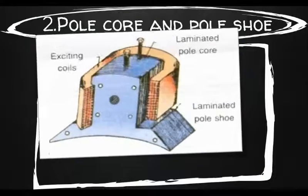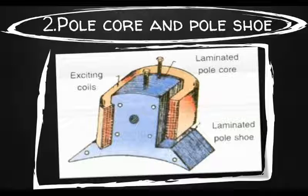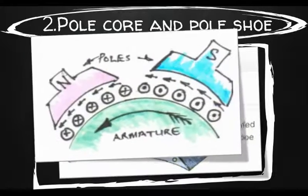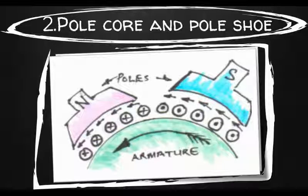Pole core and pole shoe: The field magnets consist of pole core and pole shoes. Pole core is usually of circular section and is used to carry the coils of insulating windings carrying the field circuit current. Pole cores are not usually laminated and are made up of cast steel. The pole shoe serves two purposes: they spread out the flux in the air gap and, being of larger cross section, reduce the reluctance of the magnetic path. They also support the exciting coils.